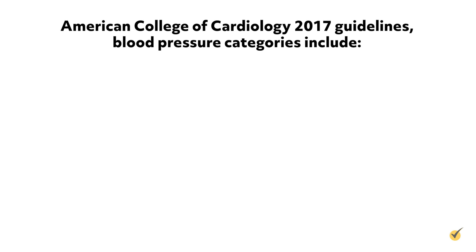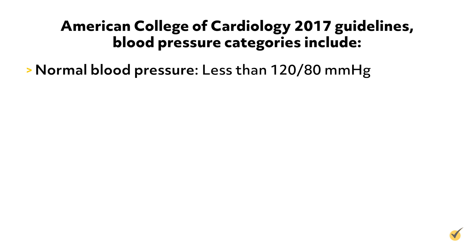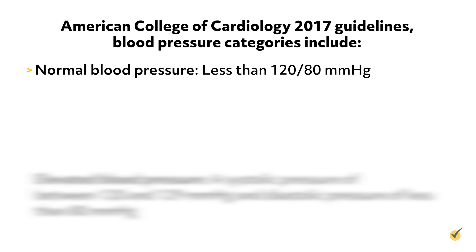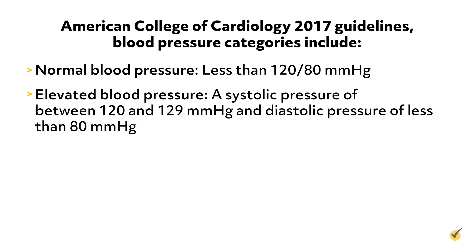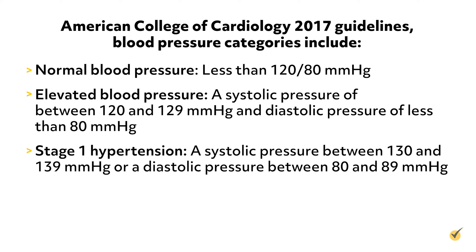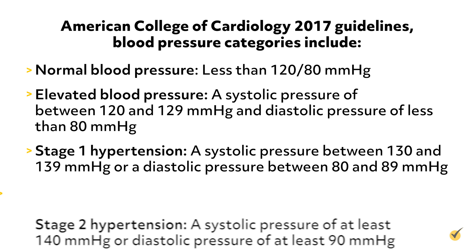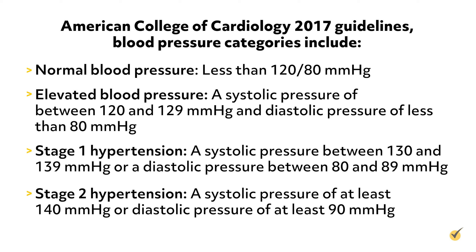According to the American College of Cardiology 2017 guidelines, blood pressure categories include: normal blood pressure, which is less than 120 over 80 millimeters of mercury; elevated blood pressure, which is a systolic pressure of between 120 and 129 millimeters of mercury and diastolic pressure of less than 80 millimeters of mercury; stage 1 hypertension, which is a systolic pressure between 130 and 139 millimeters of mercury or a diastolic pressure between 80 and 89 millimeters of mercury; and stage 2 hypertension, which is a systolic pressure of at least 140 millimeters of mercury or diastolic pressure of at least 90 millimeters of mercury.